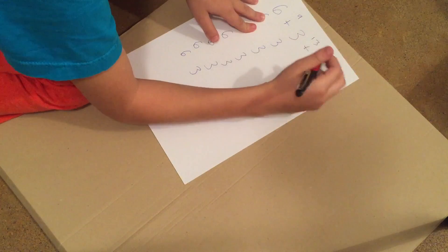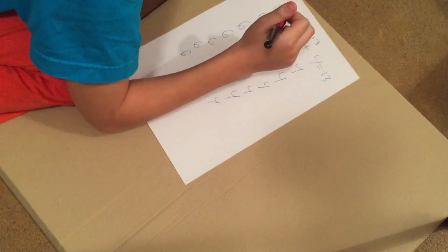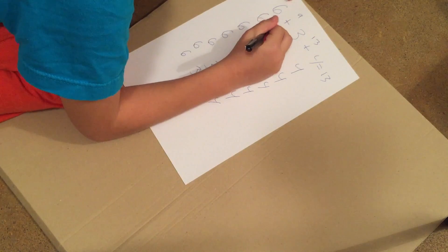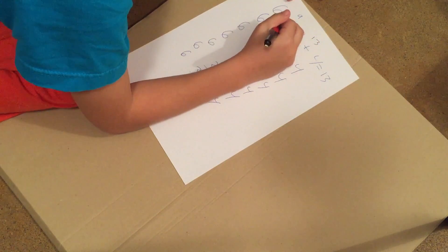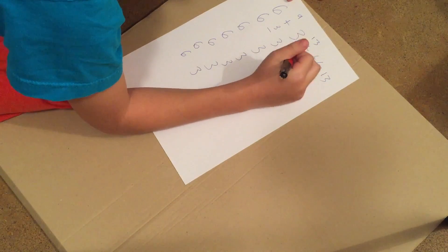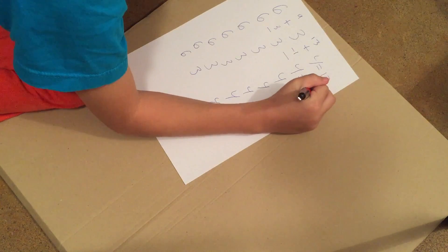So 6 plus 3 plus 4 is 13. Then I will do it with subtraction. 6 minus 3 minus 4. 6 minus 3 is 3. 3 minus 4 is minus 1. So the answer is minus 1.